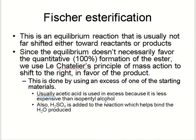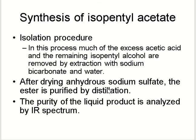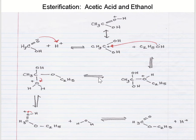We can do this by using an excess amount of starting material — usually acetic acid, because it is less expensive. We can also use sulfuric acid, which can enhance the reaction rate by helping bind the water produced. The synthesis of isopentyl acetate involves extraction with sodium bicarbonate and water for purification.